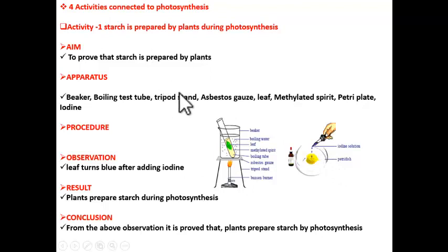Definitely leaf will turn blue and that says that leaves prepare starch during photosynthesis. If this question is given for examination, you have to write the answer under six heads: Aim - to prove that starch is prepared by plants, Apparatus, Procedure, Observation, Result and Conclusion.